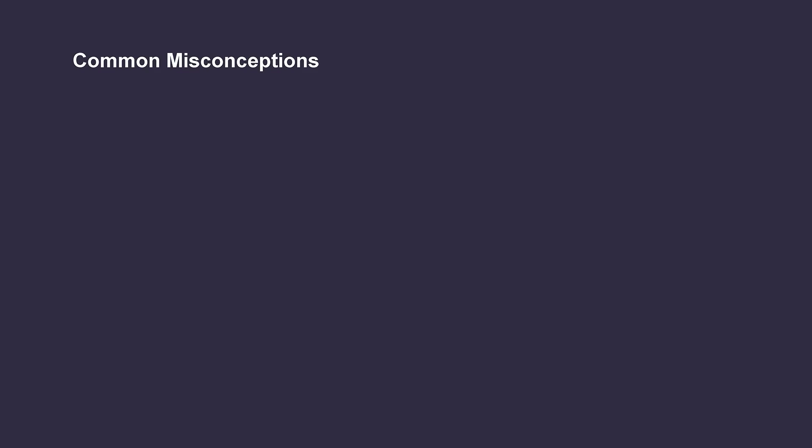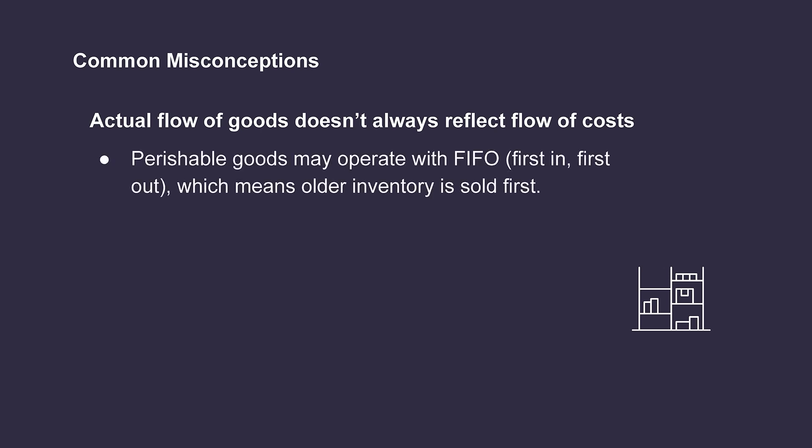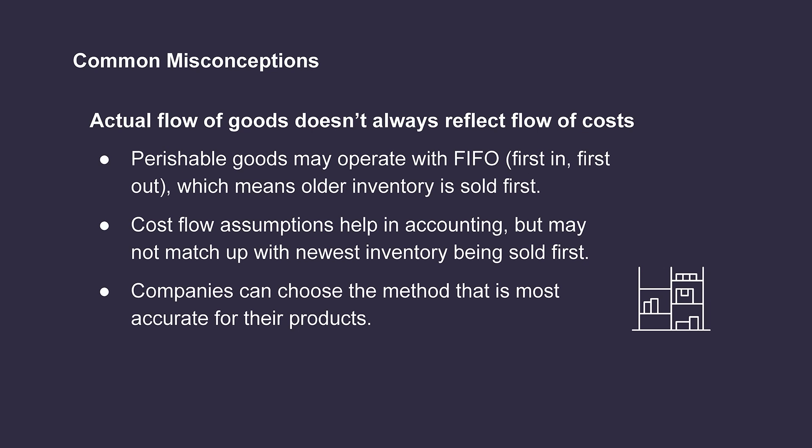Now that we understand how LIFO works, let's talk about a common misconception. The goal with cost flow assumptions is that companies choose the one that most accurately aligns with the flow of their inventory sales. So for a company that sells perishable goods like fruit and vegetables, it's likely that their older inventory will be sold first. If that's the case, it would generally be more reasonable for them to select FIFO, or first in, first out. However, companies don't always choose the method that matches up directly with the physical flow of their inventory. It's important to remember that these are just cost flow assumptions, meaning that the physical flow of costs can be different from the actual flow of the physical inventory units. Just because a company is using the LIFO method to track their costs doesn't mean they necessarily have to sell their newest inventory first.